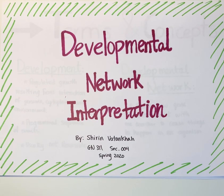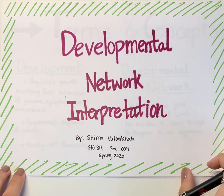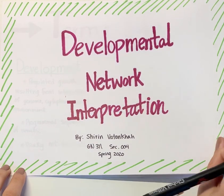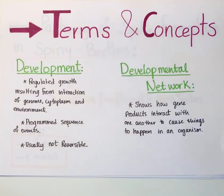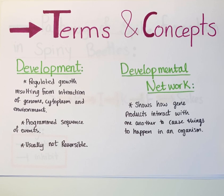Hi, my name is Jiren and today I will be talking about development and the developmental network of spiny beetles specifically. To give you a little bit of background knowledge, development is a process of irreversible growth that causes a sequence of regulated events which as a whole is called a network.